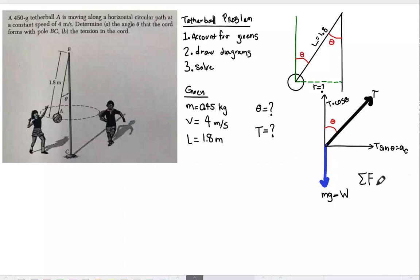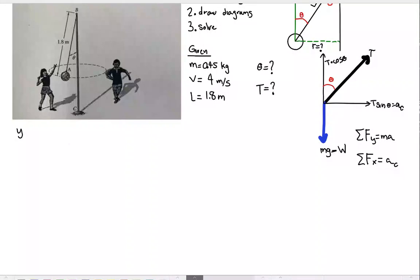We have our two forces now. We have our y forces which are going to be ma, and our x forces which are going to be ac. Now ma is actually going to equal zero because we don't have any vertical acceleration. Let's set up our y first, which is T cos theta minus mg should equal zero so that we have no movement up or down. That's going to say that T cos theta equals mg.